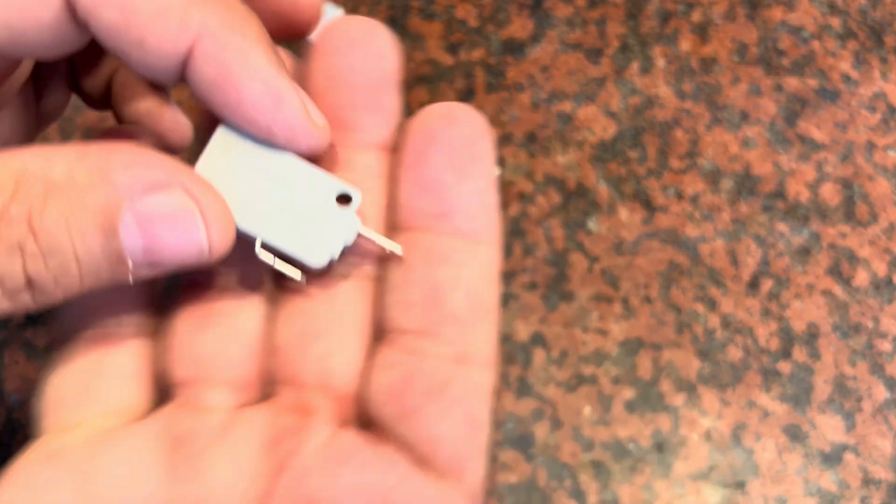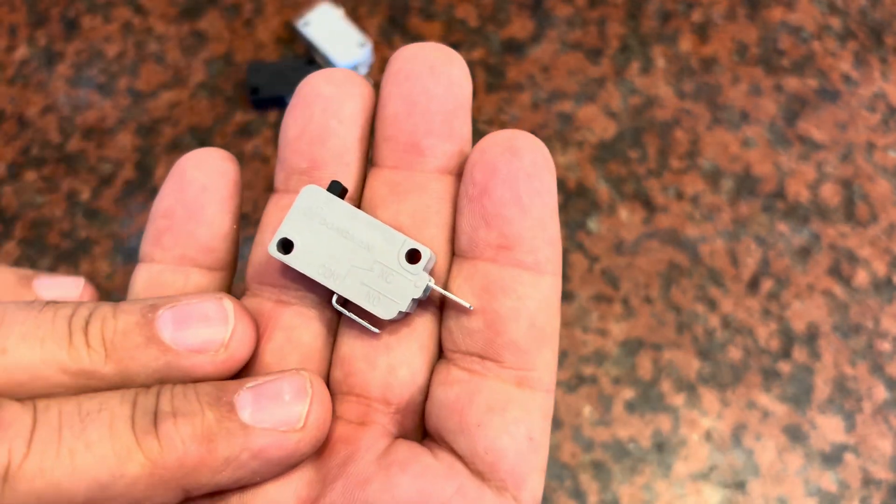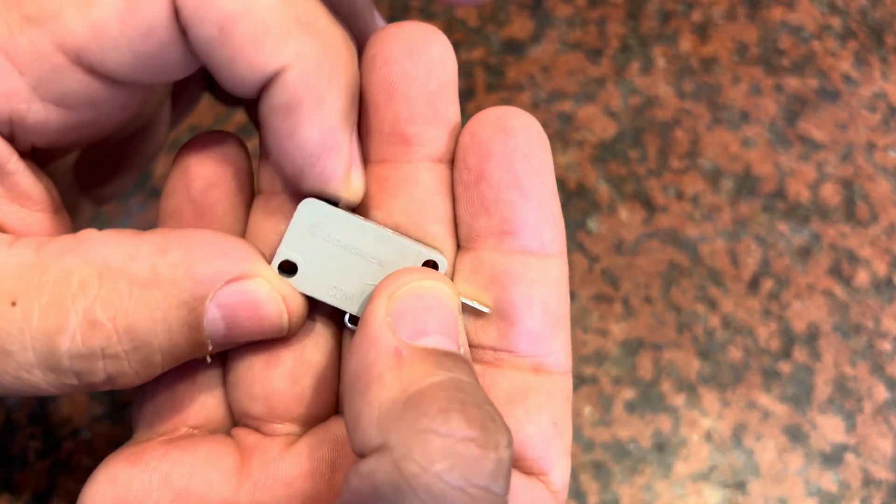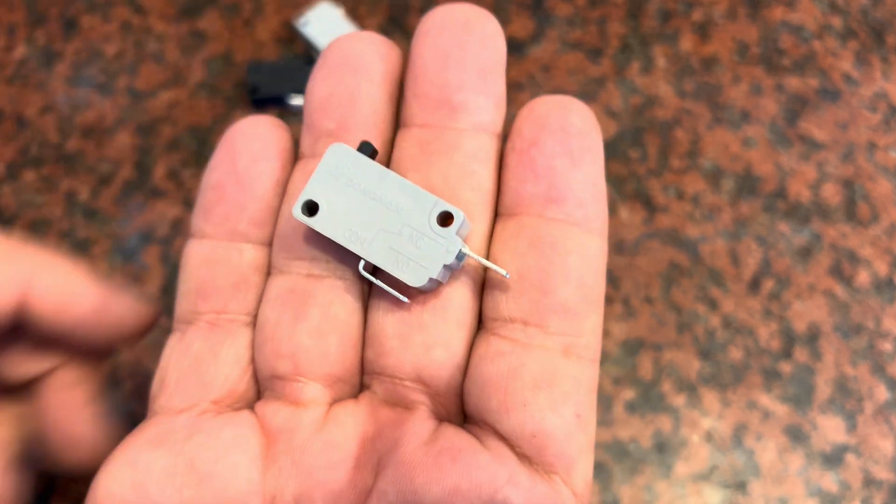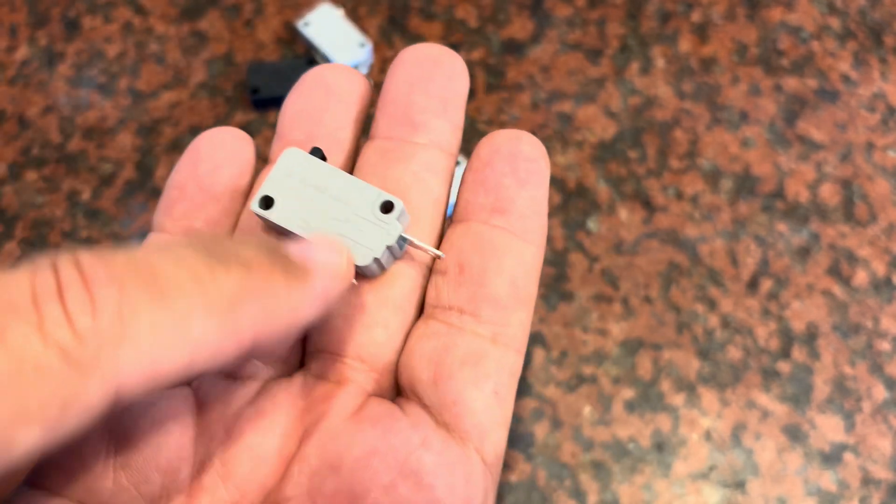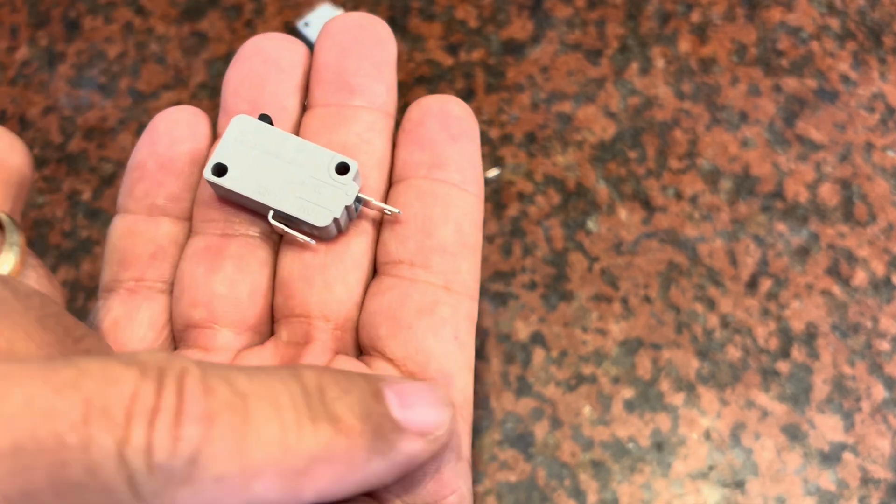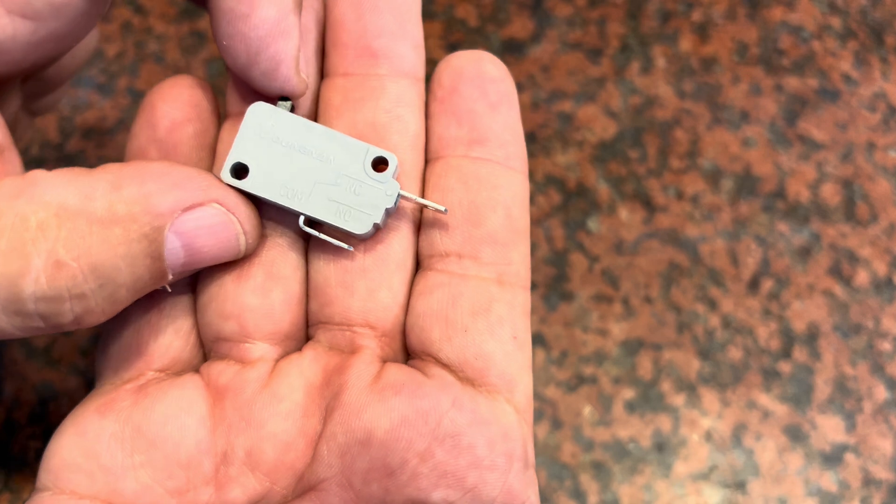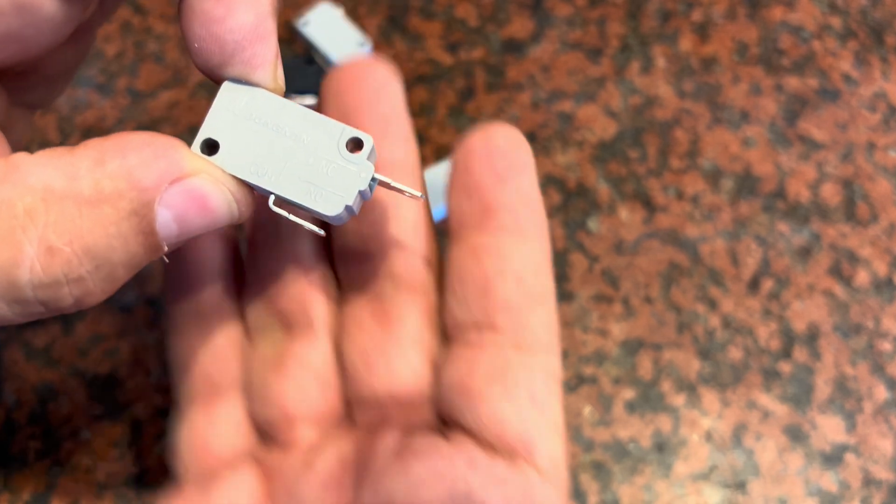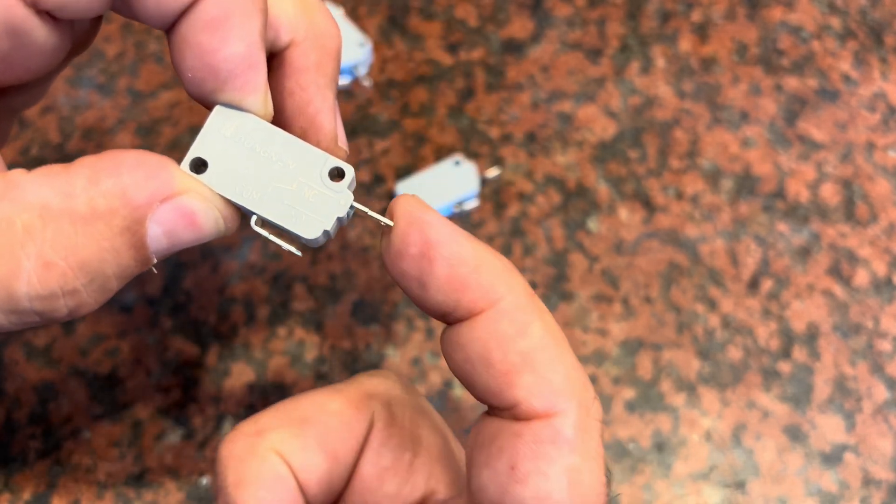Now what does that mean? Well that means when it's resting, when there's nothing going on with this switch and the little spring loaded piece is sticking out like this, that means that this switch has got a closed connection. The electricity will flow from here through here. Now when you click the button here on a normally closed switch you break that connection and now electricity won't flow from here through here.